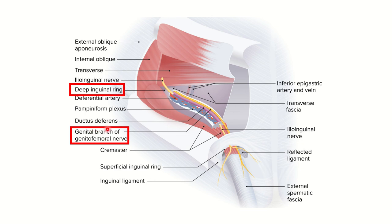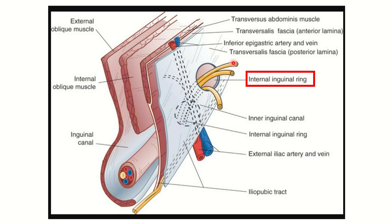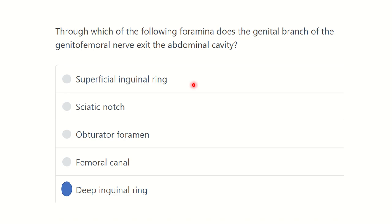Here we can see the genitofemoral nerve giving two branches: the genital and the femoral. In the second picture, we can see the deep internal ring — and through the deep internal ring, one of the nerves passing is the genitofemoral nerve.